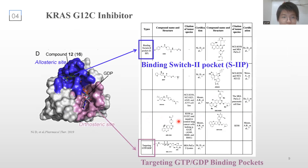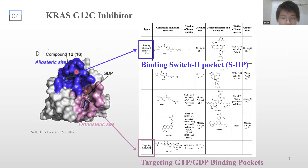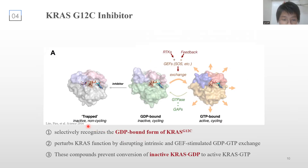Now let's have a look at KRAS G12C inhibitors. KRAS G12C inhibitors can be categorized into orthosteric inhibitors or allosteric inhibitors. Allosteric inhibitors bind into the allosteric pocket, namely the switch-2 pocket. Orthosteric inhibitors compete with nucleotide binding, while allosteric inhibitors selectively recognize the GDP-bound form of KRAS G12C, preventing KRAS from binding to GTP and locking KRAS in its inactive state.